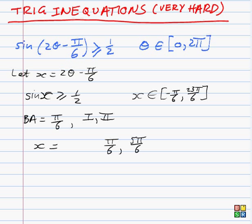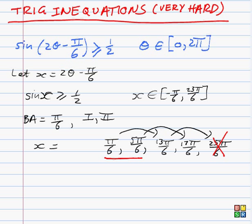And now we need to add and subtract 2π to these solutions. So if we add 2π, we get 13π/6. If we add 2π to this, we get 17π/6. If we add 2π to this, we get 25π/6. Now clearly, that's just outside the range. So we don't want 25π/6.